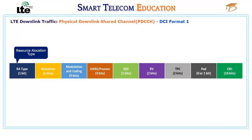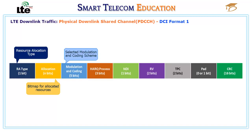Resource allocation type: 0 indicates that the UE is assigned entire RBGs; 1 means only RBs within the RBGs. Allocation is a bitmap of the assigned RBGs. Modulation and coding indicates the modulation and MCS selected by the eNodeB scheduler. HARQ process is indexed to allow the UE to combine and decode the same packet transmission. New data indicator indicates the start of a new packet to discard any data in the HARQ buffer.